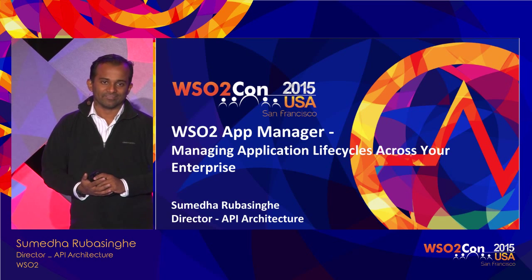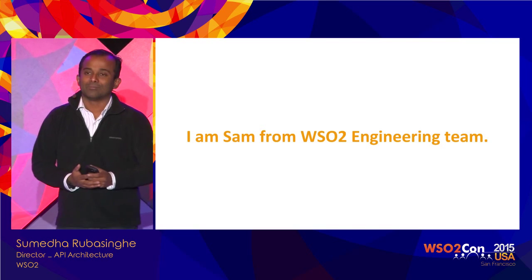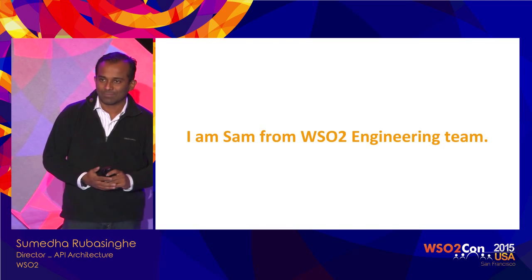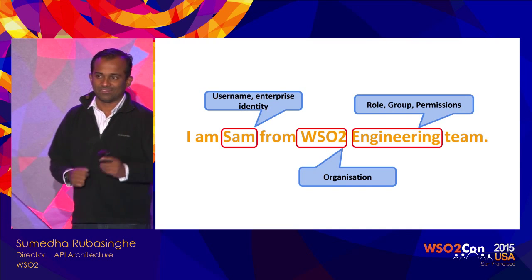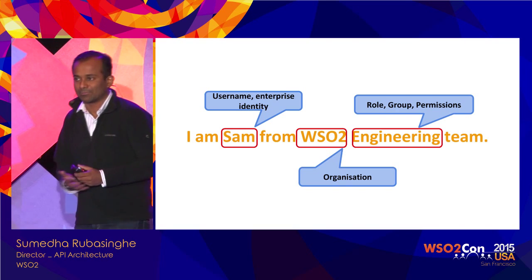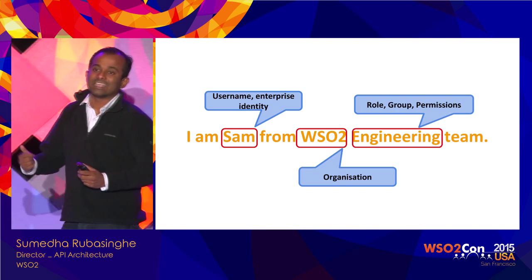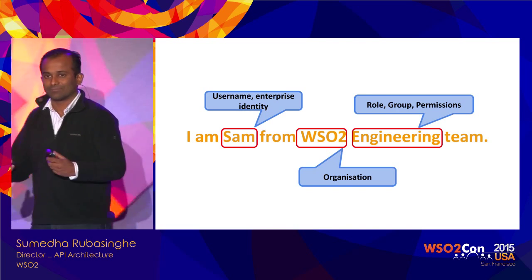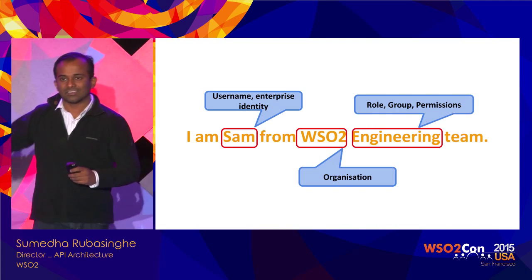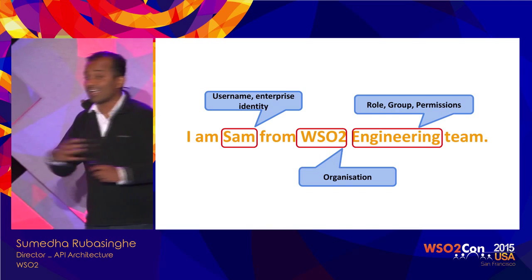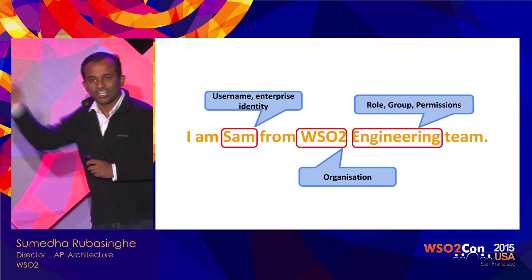To explain what we have done, I'm going to do a little bit of role playing. I'm Sumedha, but in this case I'm Sam from WSO2 sales team. This statement has several key elements: Sam is an identity, a user within our system and our LDAP; WSO2 is the organization; and sales team is a role — a set of privileges and permissions I get because I'm in this particular team.